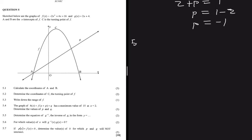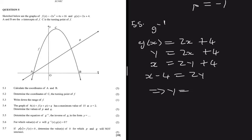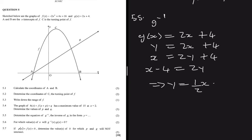Question 5.5: determine the equation of G inverse in the form y = ... G(x) = 2x + 4, written as y = 2x + 4. To find G inverse, swap x and y, giving x = 2y + 4. Solving for y: x - 4 = 2y, so y = (1/2)x - 2.